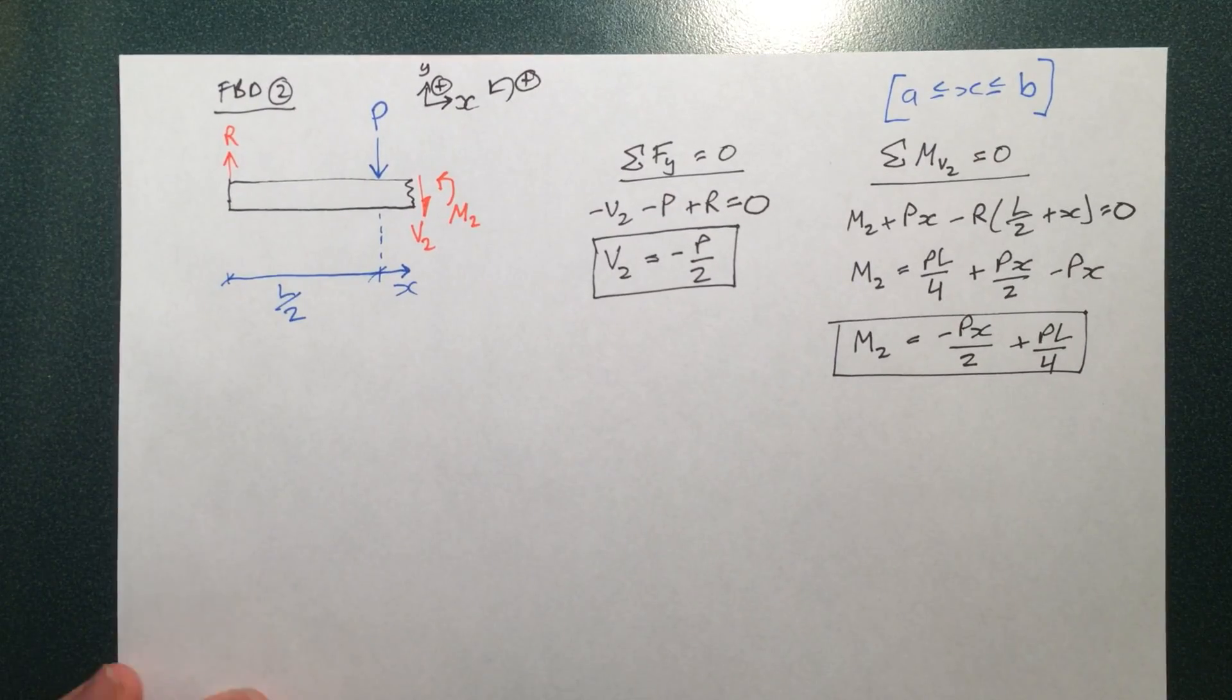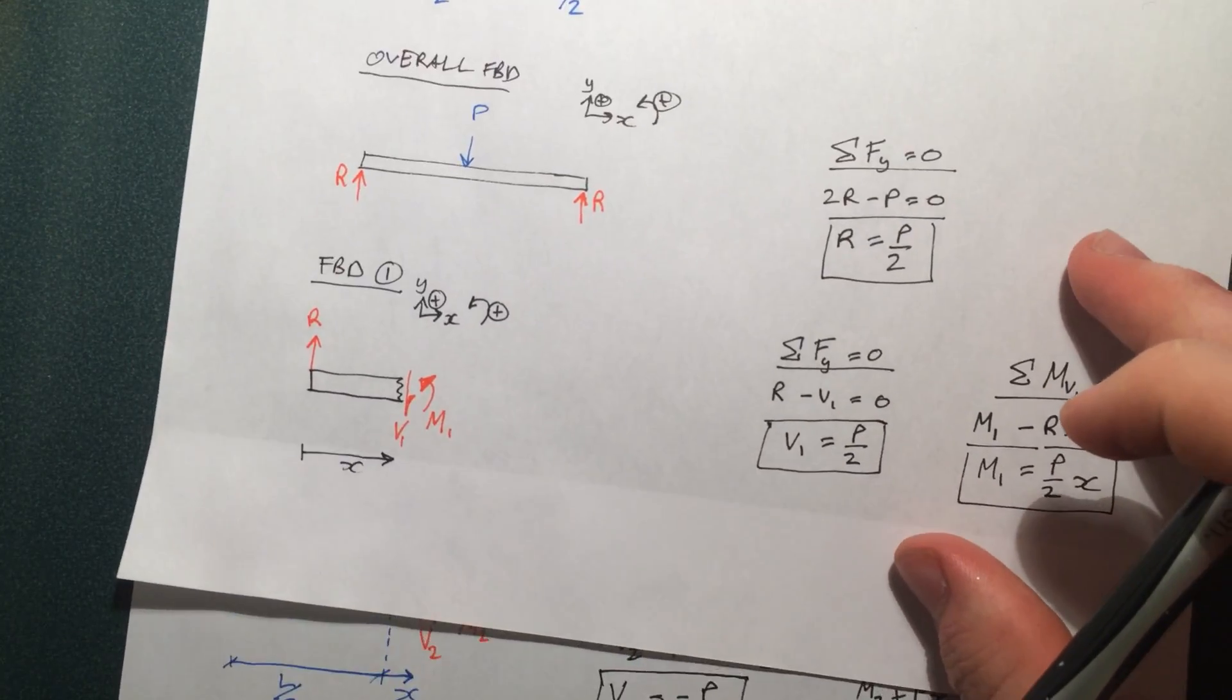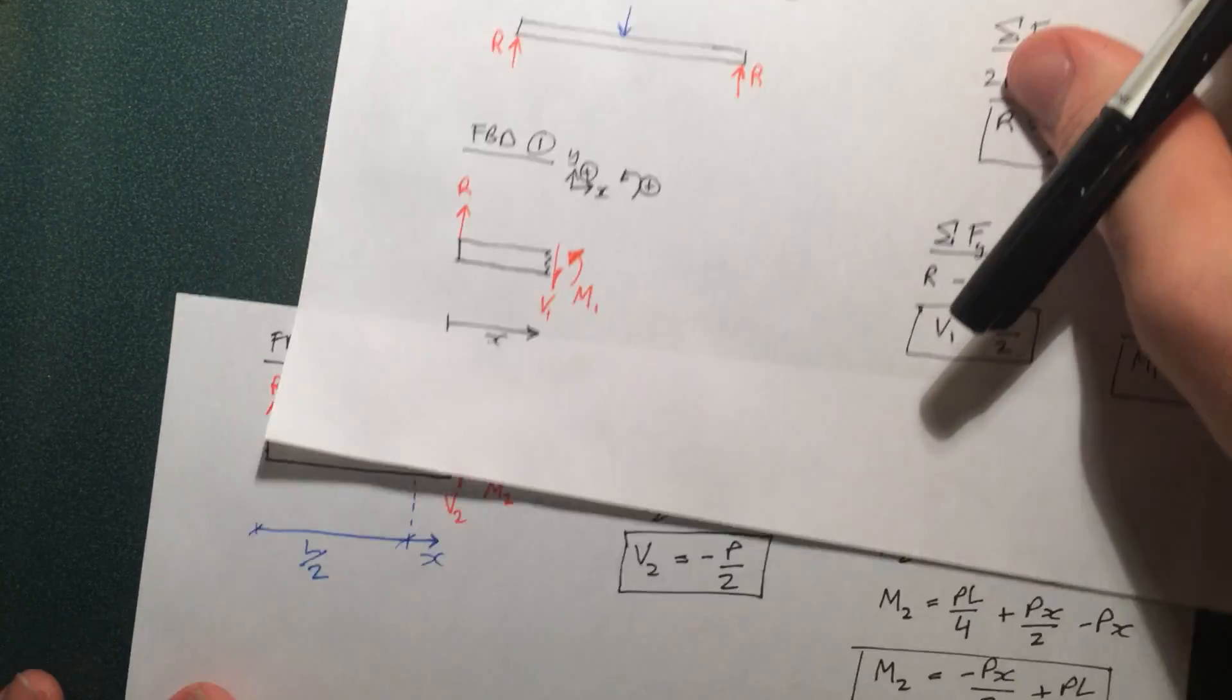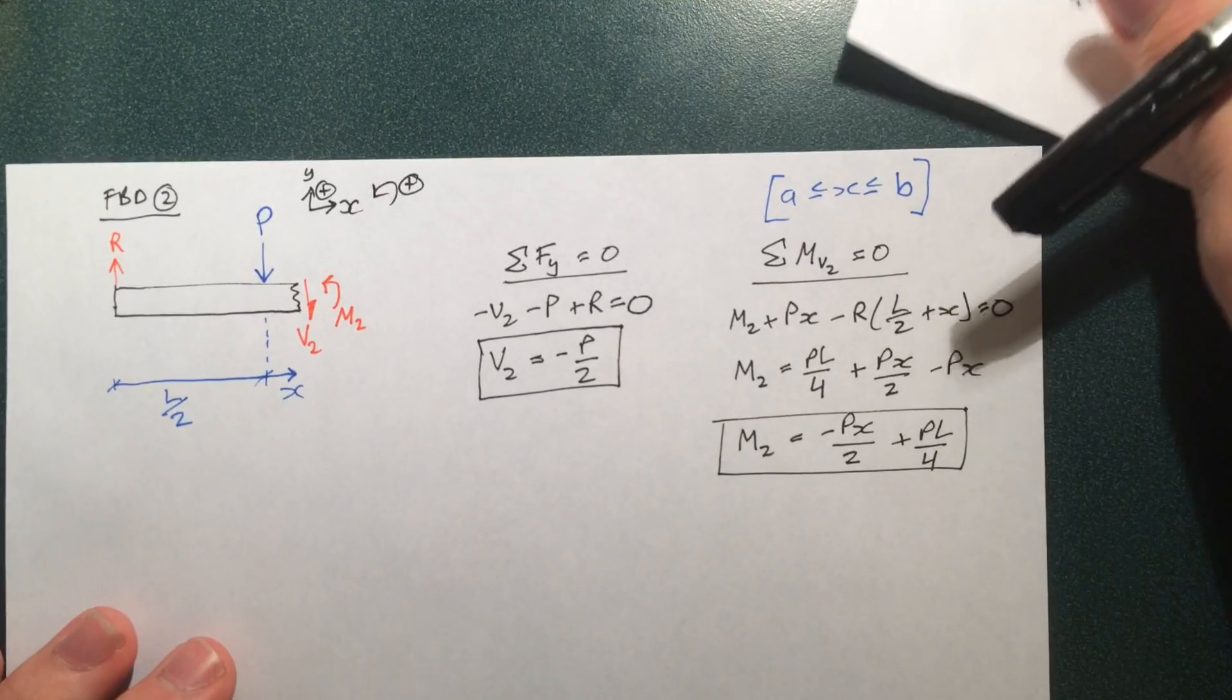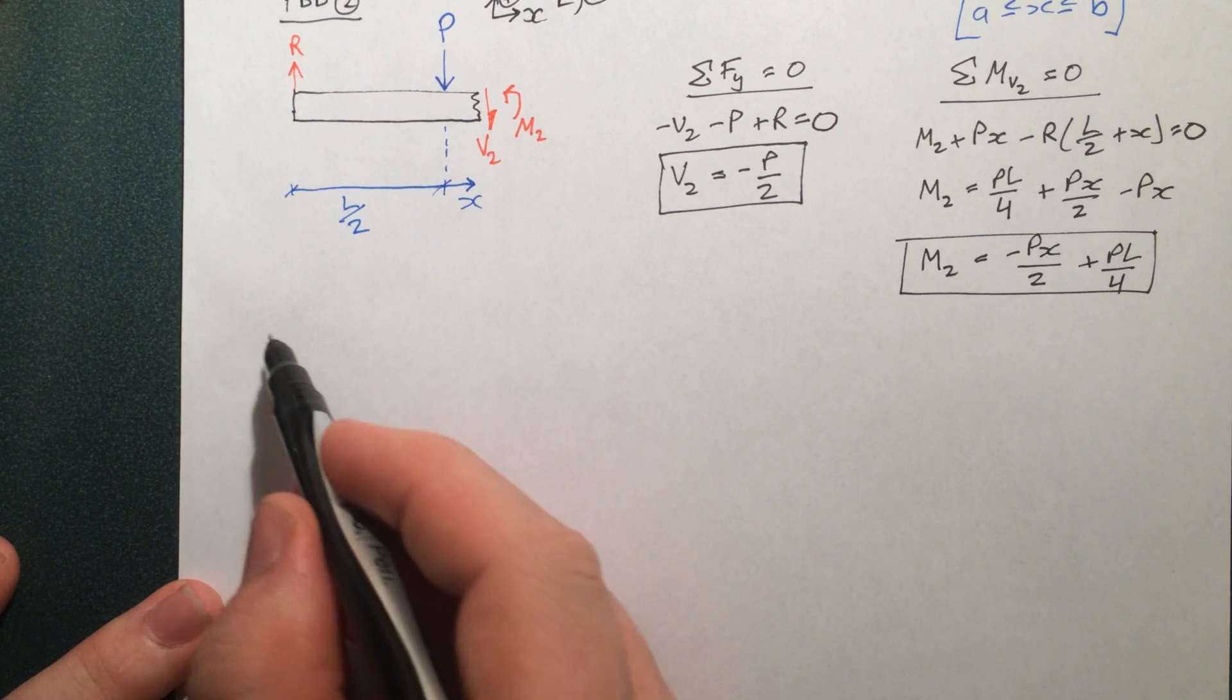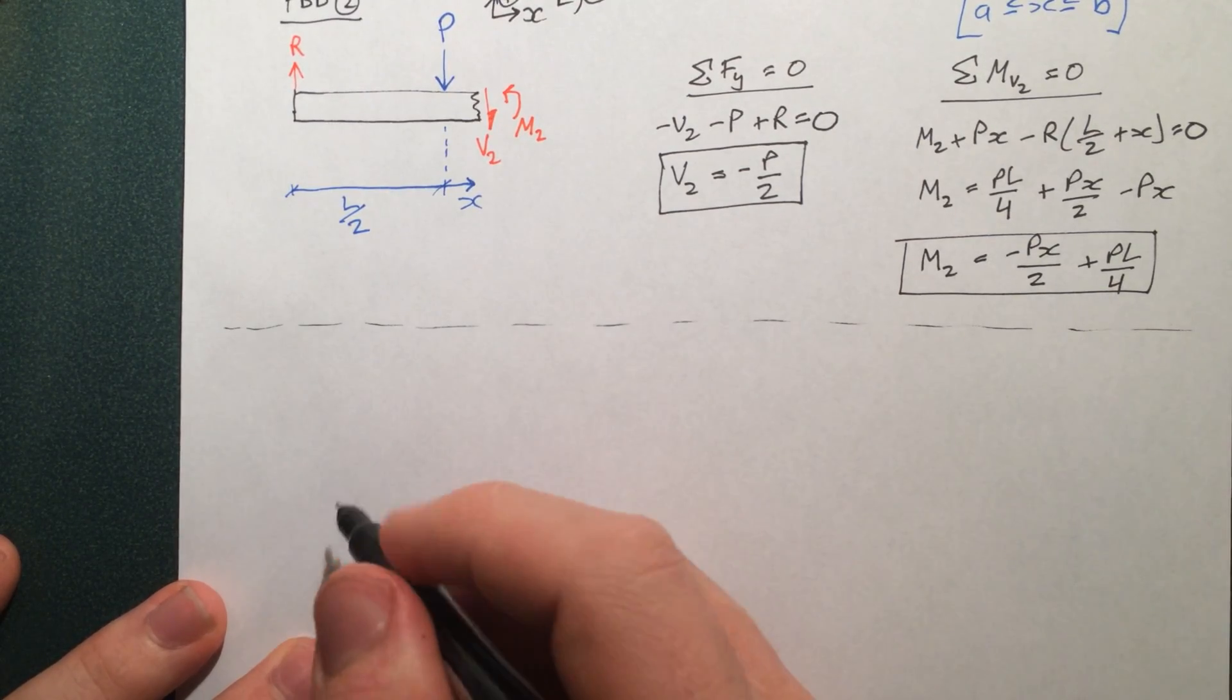And there we have it. Those are our full set of equations we need to describe the shear force and the bending moment at any point in this beam. So now let's go ahead and get into the shear force and bending moment diagrams, which is essentially just a graph of the shear force and the bending moment at different points. So let me redraw the beam and show you the way I like to draw my bending moment diagrams.